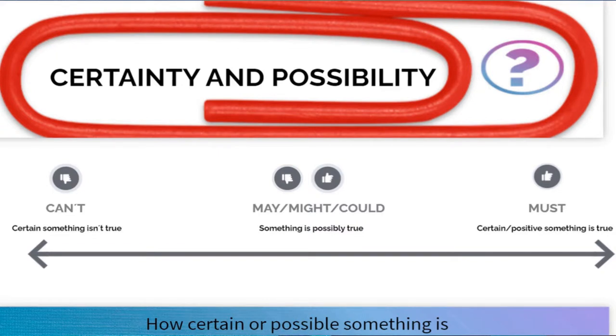Let's wrap up this video to clarify the main points. Looking at this chart, depending on how certain or positive you are about something, you use a different modal. If something is definitely true, you use 'must.' In the middle, if there is a certain possibility that something can take place, you use 'may,' 'might,' or 'could.' And if you are certain that something isn't true, you use 'can't.' That's all for now — keep on practicing because practice makes perfect. Stay posted with our videos as we will continue uploading more material about modal verbs.